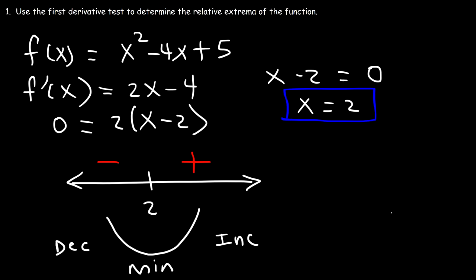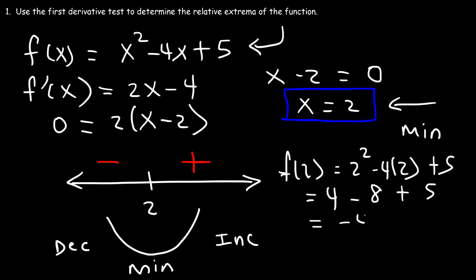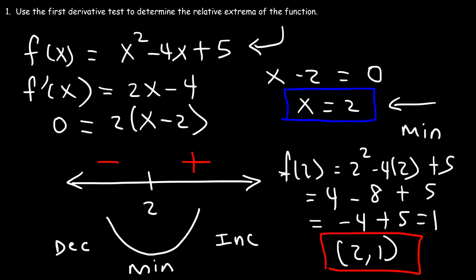This correlates to a relative minimum, so we have a relative minimum at x = 2. To find the relative minimum value, plug it back into the function to get the y-coordinate. f(2) = 2² - 4(2) + 5 = 4 - 8 + 5 = 1. So as an ordered pair, the coordinates are (2, 1). The relative minimum is located at x = 2 with a value of 1.